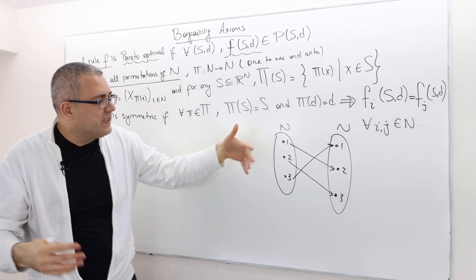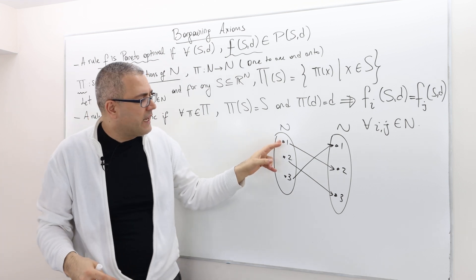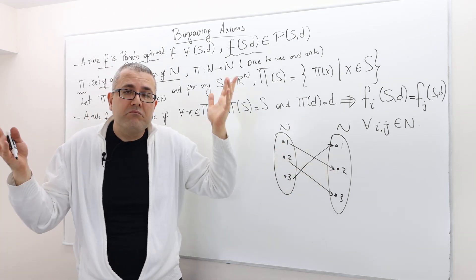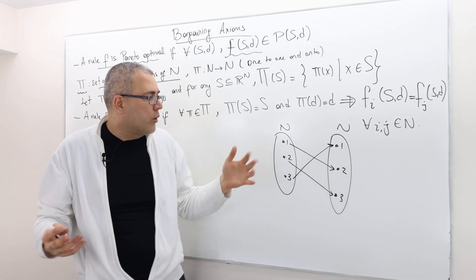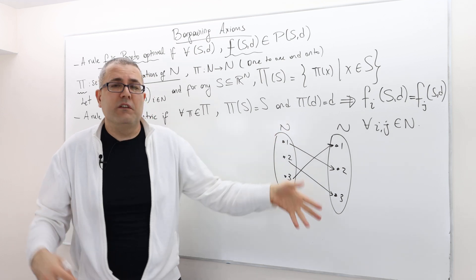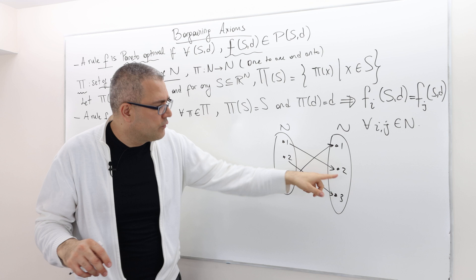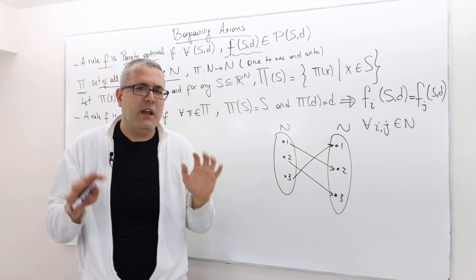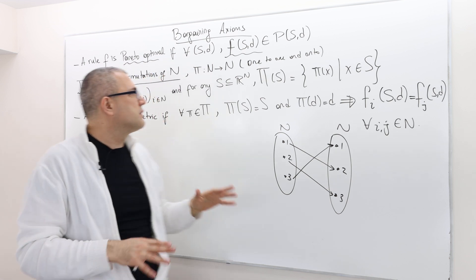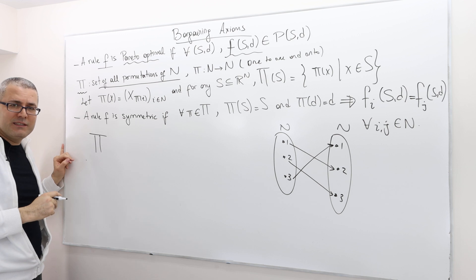So this is one pi. Obviously there are a bunch of others. You can send one to three, two to two, and three to one. Or you can send two to one, one to two, and three to three. You can generate lots of permutations. All of those permutations basically create this capital Pi set.